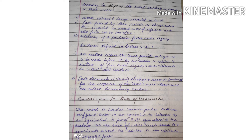Evidence is defined in Section 3 as: first, all statements which the court permits or requires to be made before it by witnesses in relation to matters of fact under inquiry — such statements are called oral evidence. Second, all documents including electronic records produced for the inspection of the court — these are called documentary evidence.